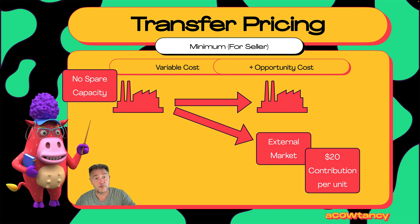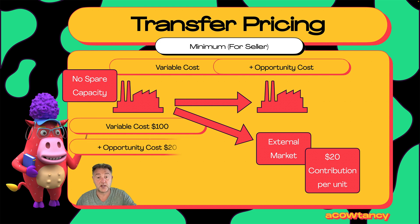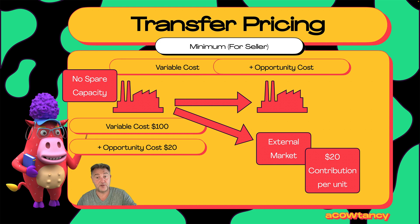So what's the minimum price that the selling division would accept? It's the variable cost — let's say 100 — plus it also wants the 20 it's losing from not being able to sell externally. You're being forced to sell internally and we're losing that 20 because we've got no spare capacity.